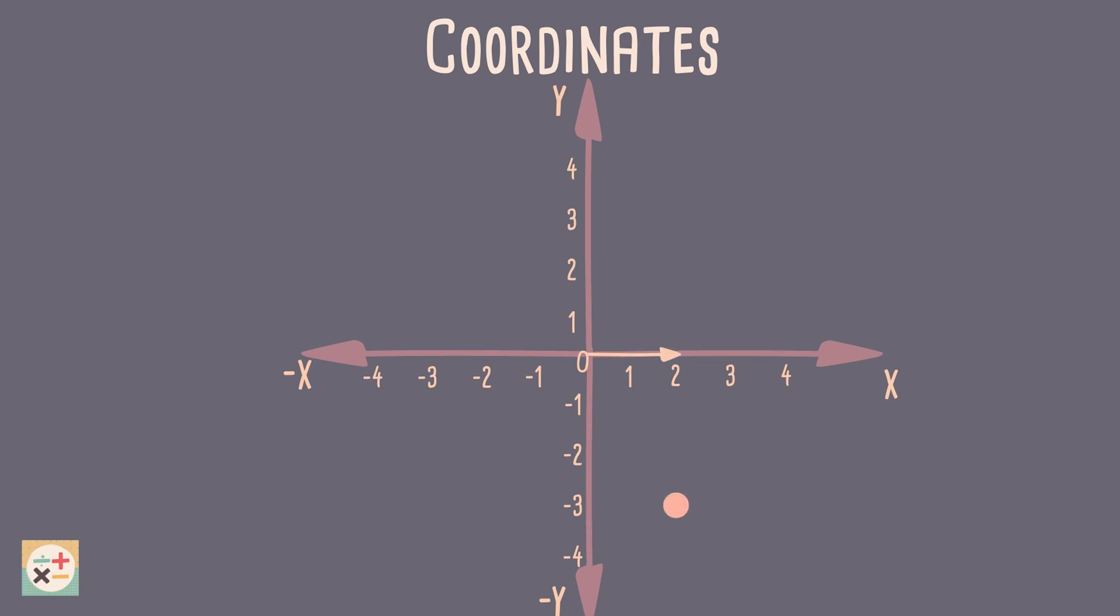Let's have a look at this point. It measures 2 across on the x-axis and 3 down on the y-axis. So this is how we would write the coordinate.